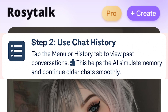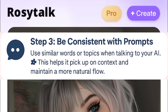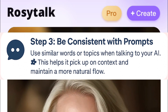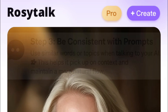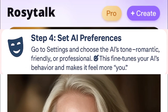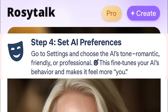Also, be consistent with how you talk to the AI. Using similar phrases or referring to past chats can help the AI respond more personally. Some versions of Rosy Talk allow you to set the AI's tone or personality — whether you want a flirty partner, a best friend, or a coach — so make sure you configure that to match your preferences.